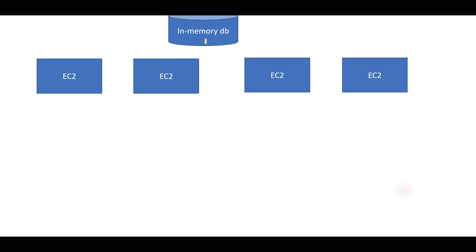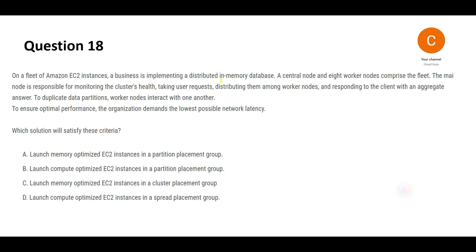Let's look at the next question. You have an in-memory database which is sitting on top of EC2 fleets. So this is a crucial in-memory database. If I have an in-memory database put on EC2 instances, what will I choose here? I'll choose memory optimized. Hence, B is wrong because it says to use compute optimized, and D is wrong because it says to use compute optimized.